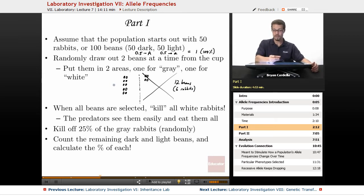Which would leave how many over here? Yeah, 88. So over here we have 88 beans, which is the same thing as 44 rabbits.